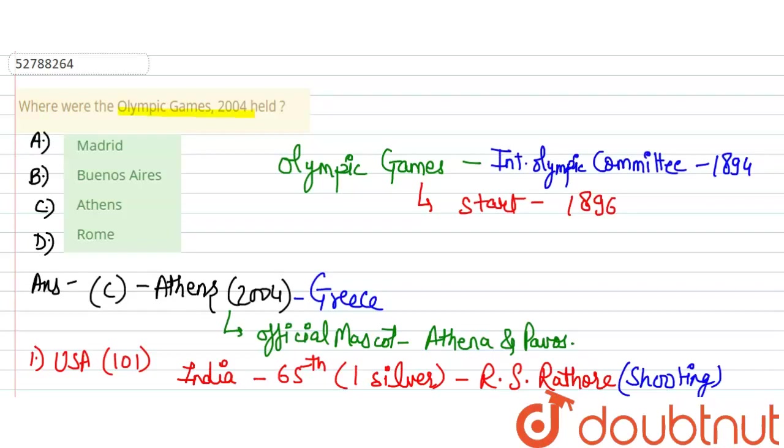Second important thing is that India started in 1900. How did India start? In 1900, we had one athlete who was representing India, Norman Pritchard.